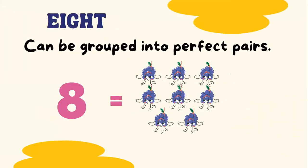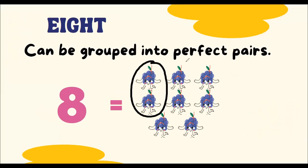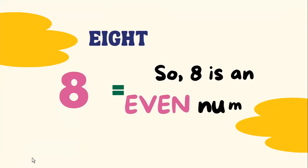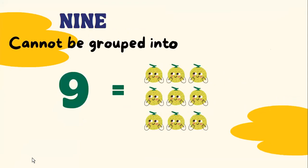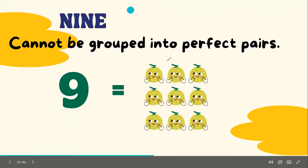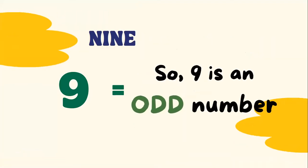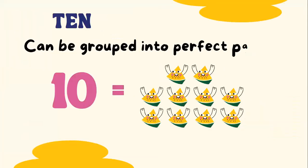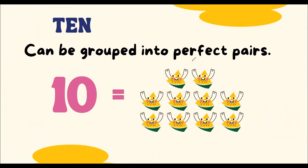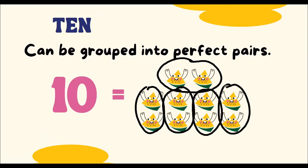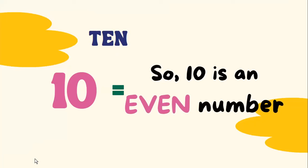Eight can be grouped into four perfect pairs, so eight is an even number. Nine cannot be grouped into perfect pairs — one item is left alone — so nine is an odd number. Ten can be grouped into five perfect pairs, so ten is an even number.